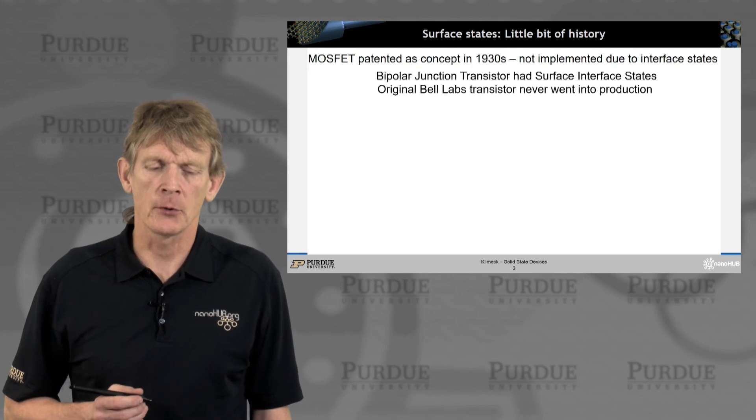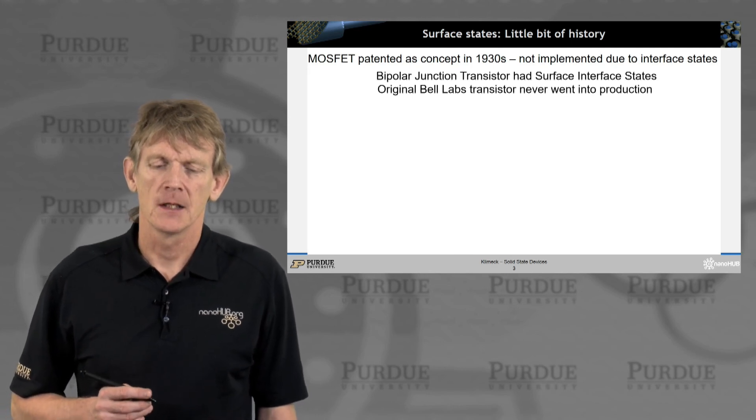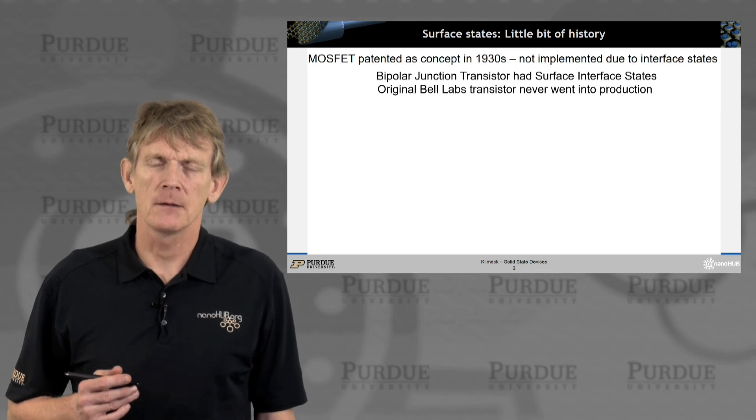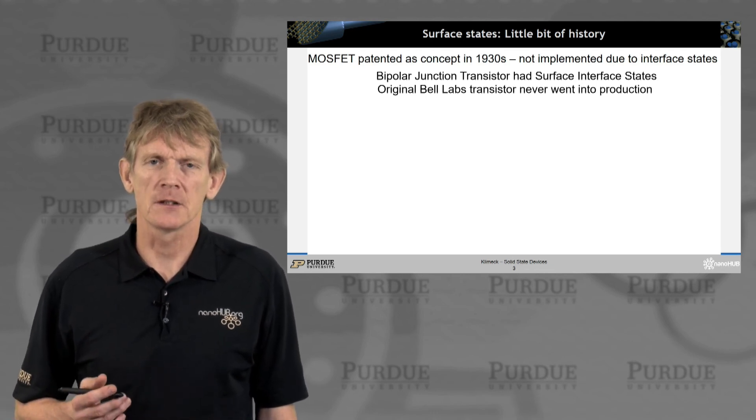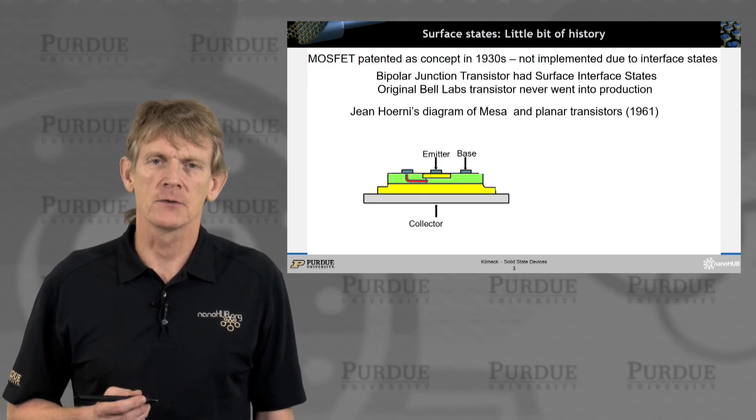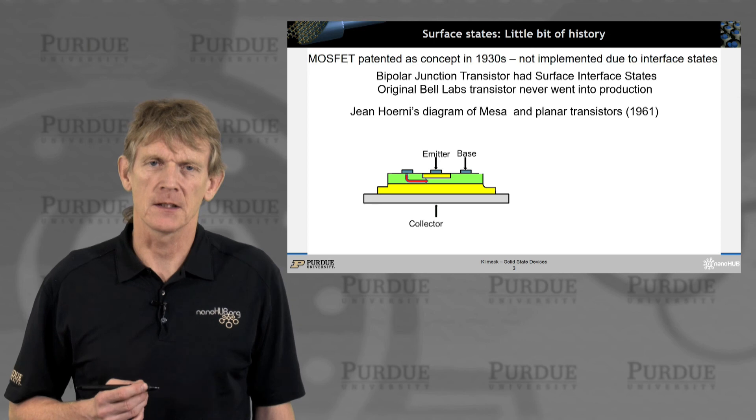The original bipolar junction transistor had issues with surface states. It was never put into production in this original form, so it was a very significant issue that dealt with interface states.